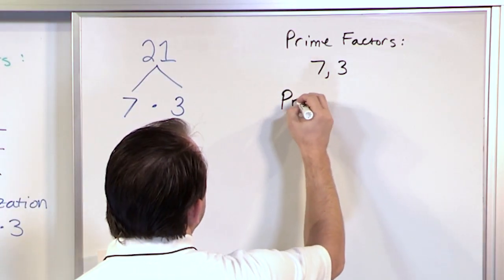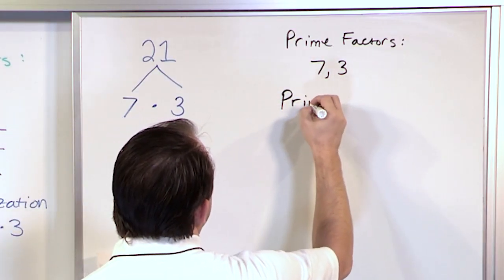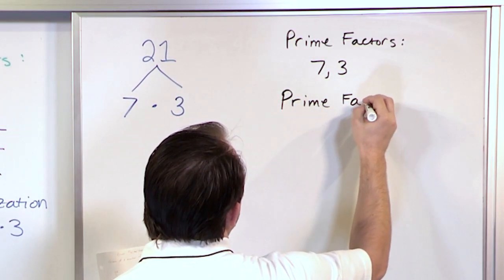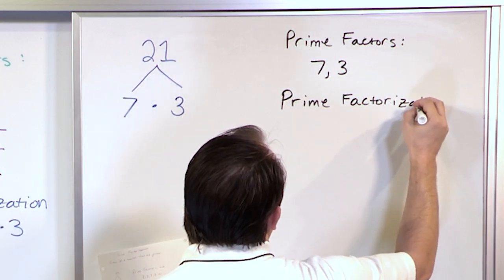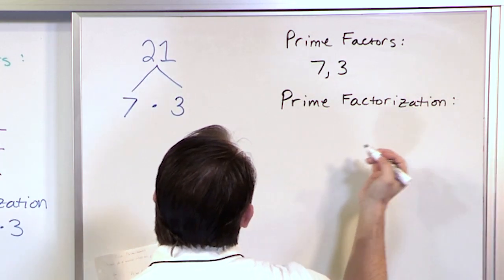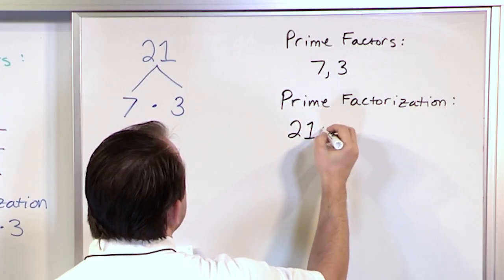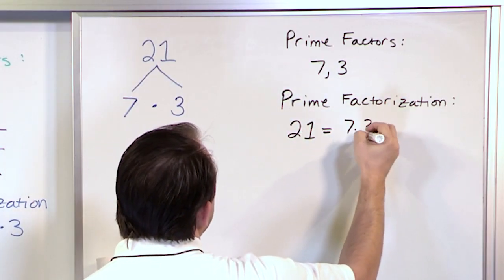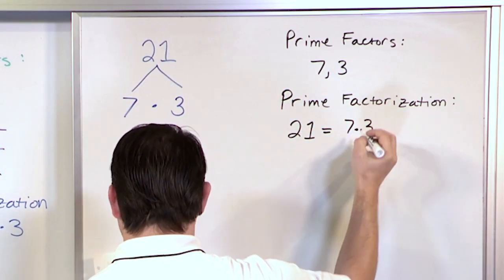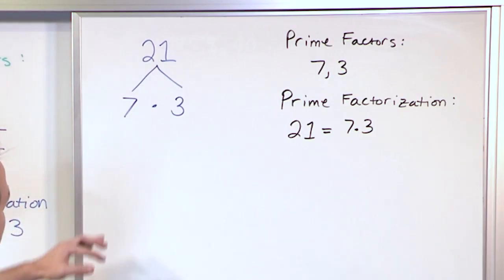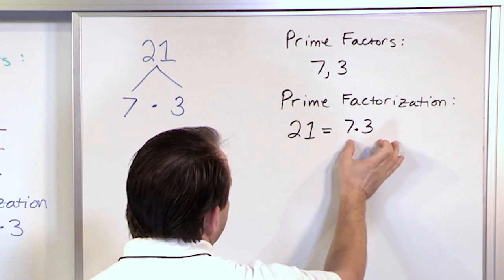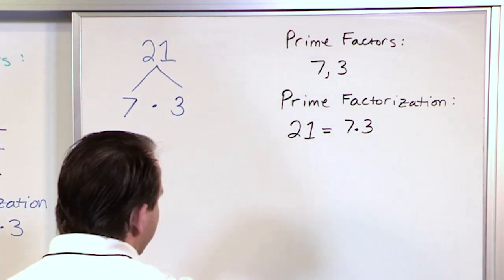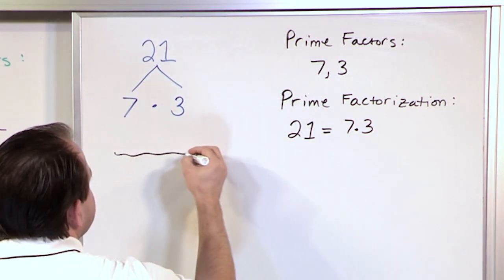If you wanted to write the prime factorization of the number 21, you would say 21 is equal to 7 times 3, or 3 times 7 — however you want to write it down. Basically whatever's at the bottom of the tree. This looks simple because we know 7 times 3 is 21, and both are prime numbers, which is why it works out that way.